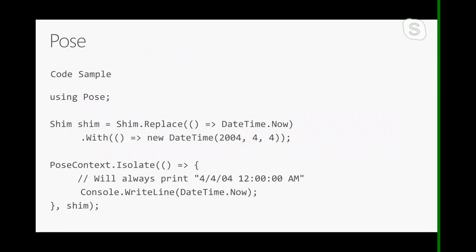Here's a simple example using Pose to show how isolation frameworks work. You create a shim for all calls to DateTime.Now, saying whenever there's a call to DateTime.Now, always return a new DateTime of 2004. In that Isolate block, whenever there's a call in any of the methods in that block — recursively — all calls to DateTime.Now return the same date. This is useful for testing subscription code: making sure that when the date is a certain value, subscriptions are appropriately canceled and users rebilled.